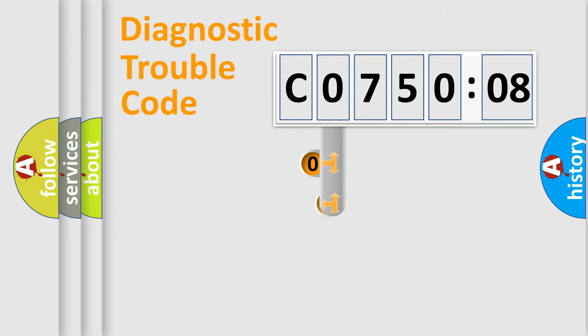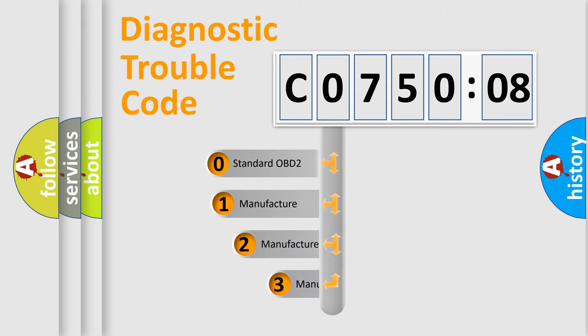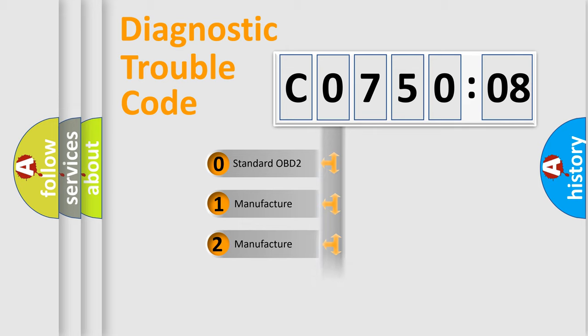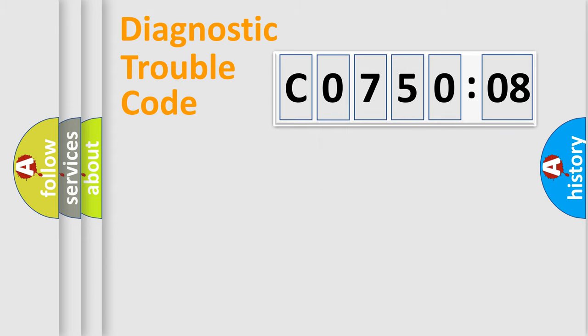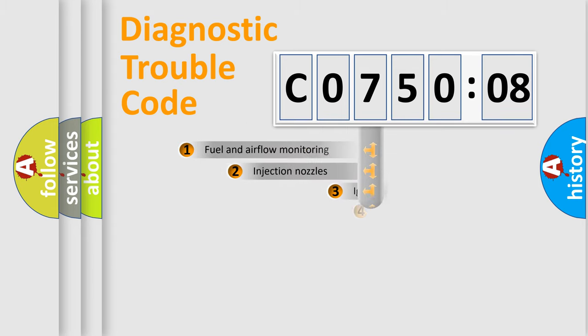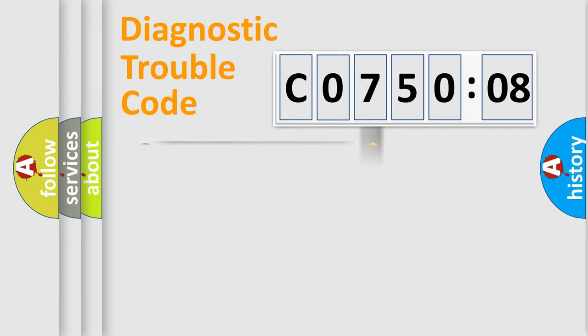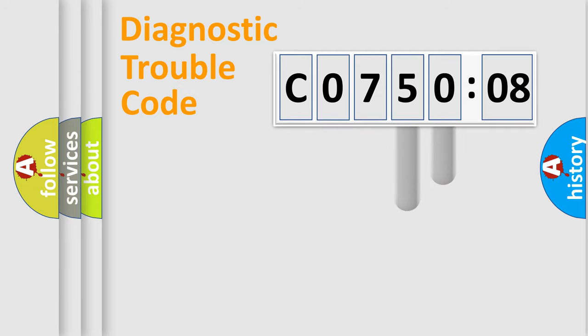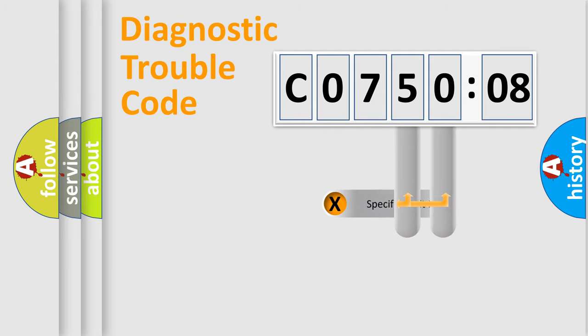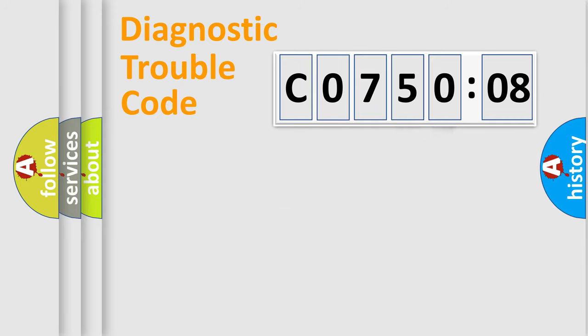This distribution is defined in the first character of the code. If the second character is expressed as zero, it is a standardized error. In the case of numbers 1, 2, or 3, it is a manufacturer-specific error. The third character specifies a subset of errors. This distribution is valid only for the standardized DTC code, and only the last two characters define the specific fault of the group.